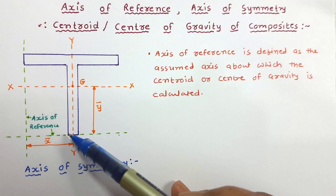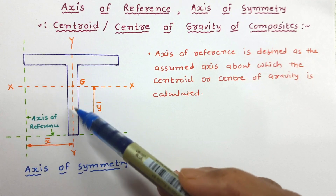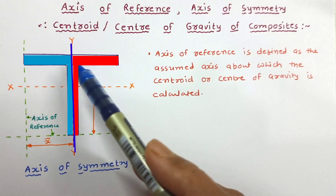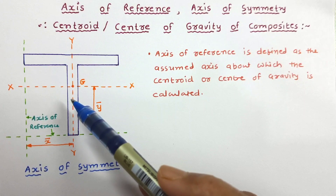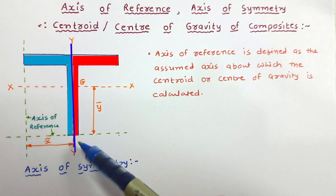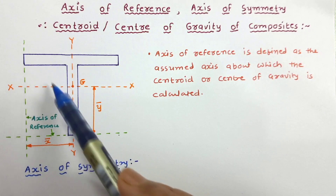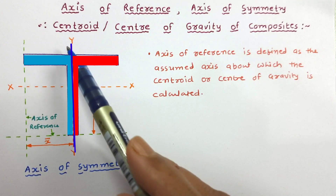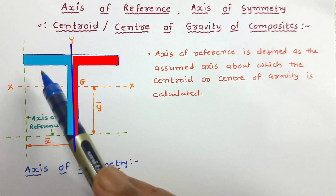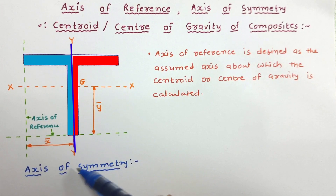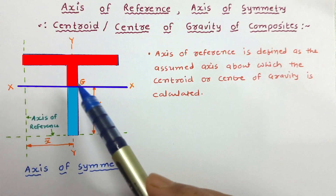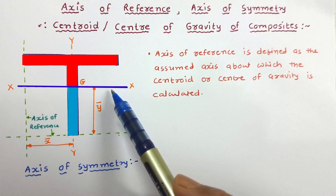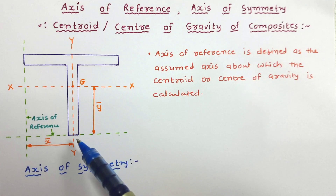Now let us move to axis of symmetry. In this figure, the T-Section has been shown. In this T-Section, this is the Y-Y axis. If we see carefully, this axis divides the given T-Section into exactly two equal and identical parts. So if we fold this T-Section from this axis, this left portion will exactly coincide over the right portion. Such an axis which divides the figure into two identical parts is called axis of symmetry. If we see the other axis, it does not divide this T-Section exactly into two parts, so this is not an axis of symmetry.